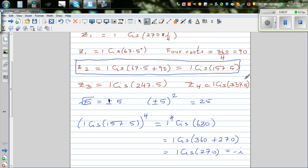And 1 cis 270 is minus i. So you can do the same thing. If you raise z1, z3, or z4 by 4, you can check. Ultimately you should get 1 cis 270, which is minus i.